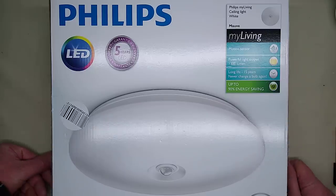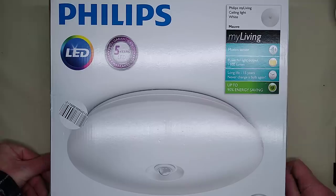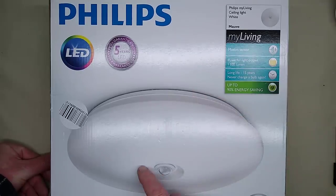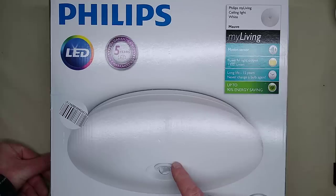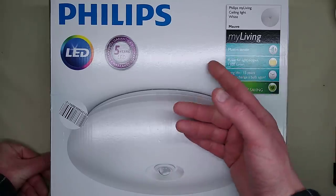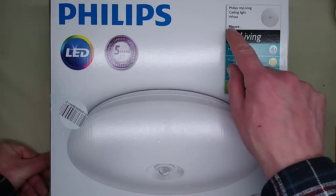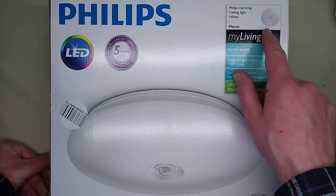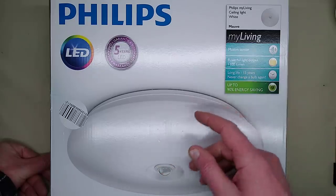I saw this light in Lidl's and thought it'd be interesting to take a look inside. It was £20, one of those ceiling mounting lights with the passive infrared detector underneath, with the general sort of ratings. I'm not sure why it says mauve - I think it must be the model number, not anything to do with the light output color.